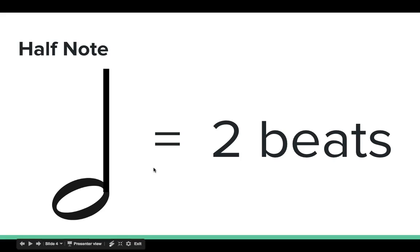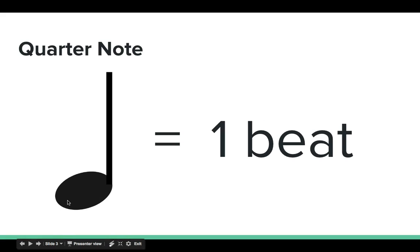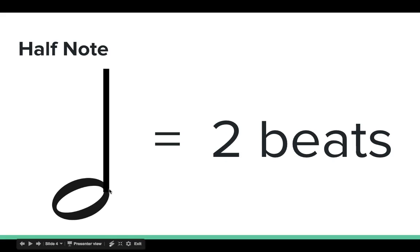This is the half note. Notice the difference in the way it looks. It's not colored in, it's not solid. The stem is still there, and again, it can be written on the left side pointing downward. But it's important to recognize the difference between the quarter note—how the quarter note is solid—and the half note is not solid. The half note equals two beats.